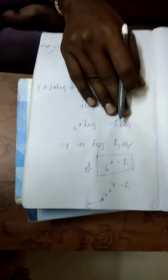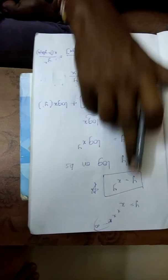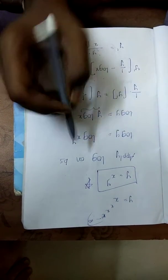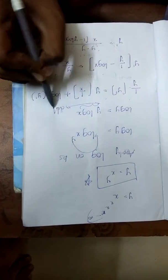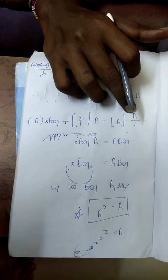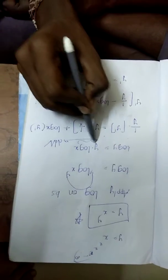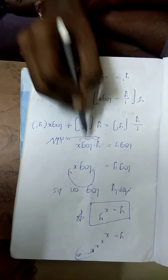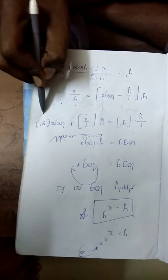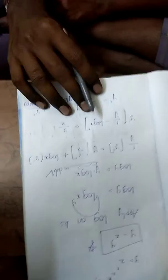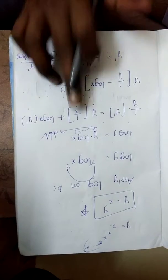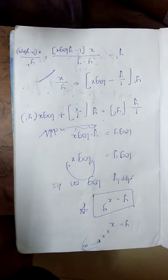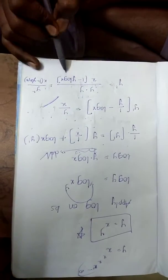So y equals x to the power y. Taking log on both sides: log y equals y log x. Differentiating both sides using the product rule on the right: 1 by y times y dash equals y times 1 by x plus log x times y dash. Rearranging: y dash times 1 by y minus log x equals y by x, so y dash equals y squared by x into 1 minus y log x.